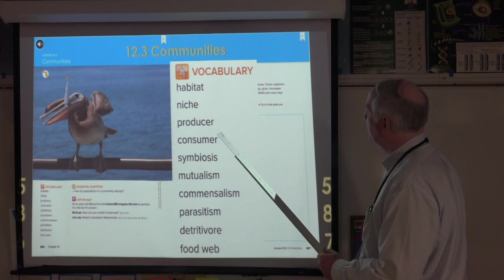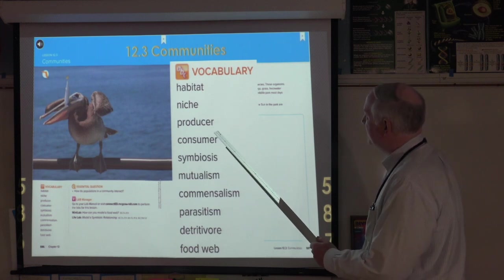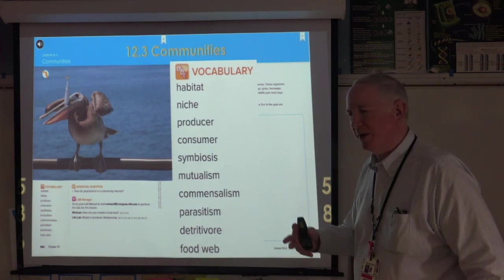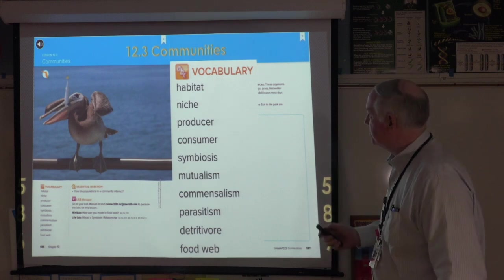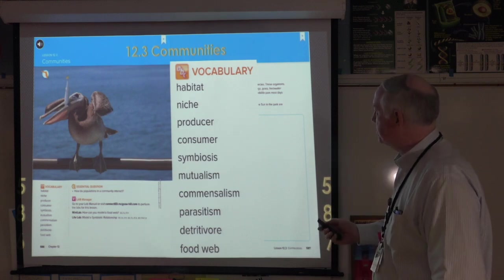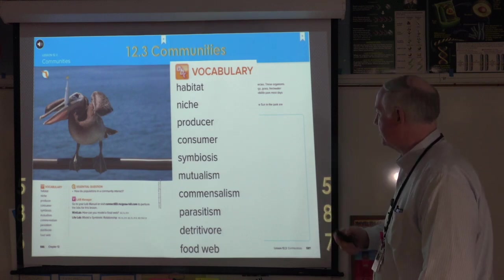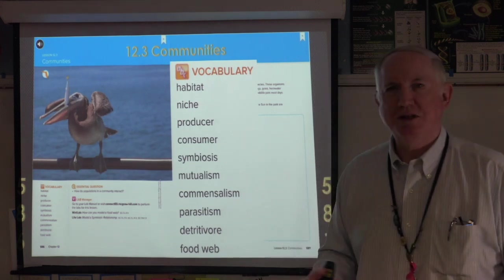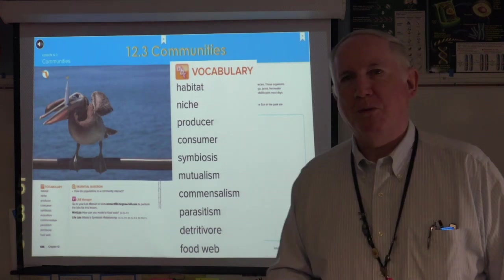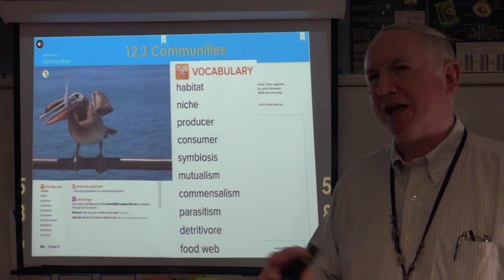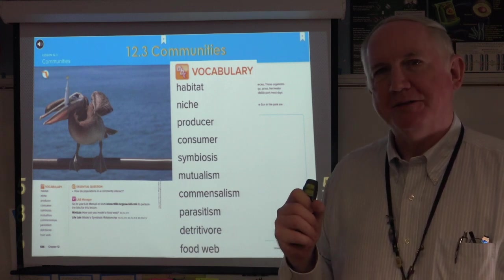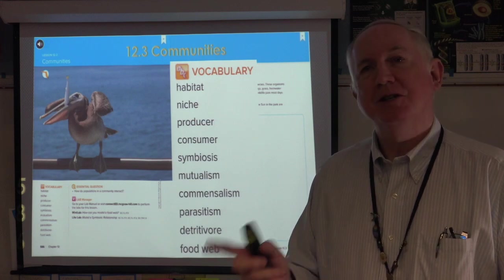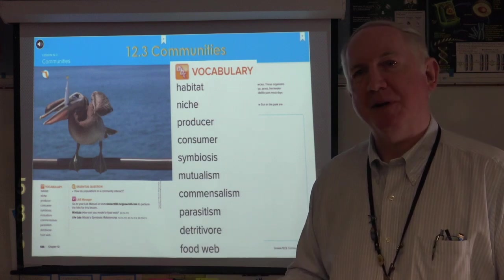We have habitat, niche — I'm going to pronounce it 'niche' but you can pronounce it 'niche' — producers, consumers, symbiosis, mutualism, commensalism, parasitism, detritivore, and food web. All of these words are really pretty simple, a lot are related. But before we dive any further, there's a guy who's a heck of a lot smarter than me who's going to explain it to you.